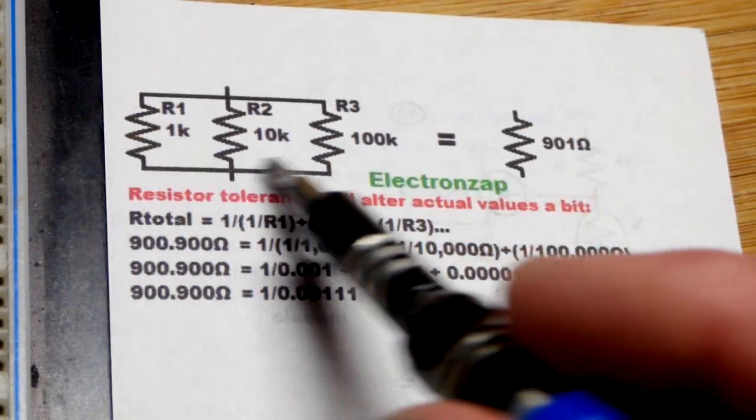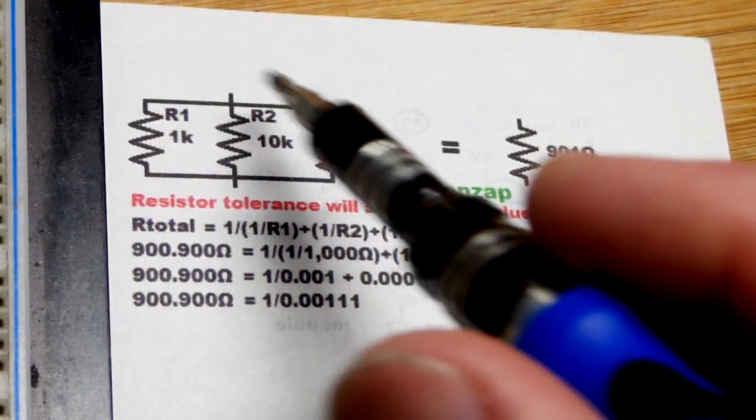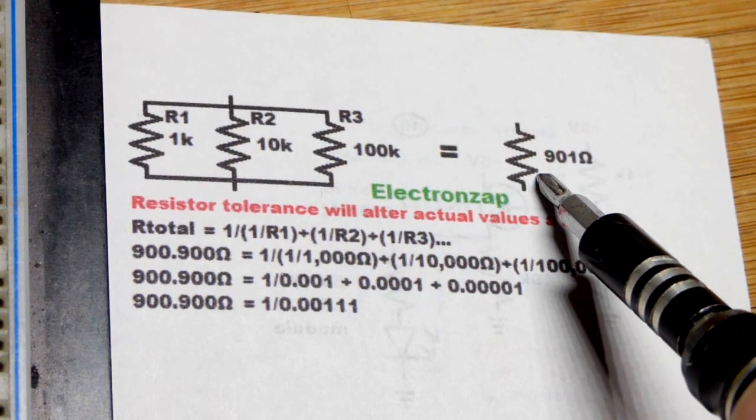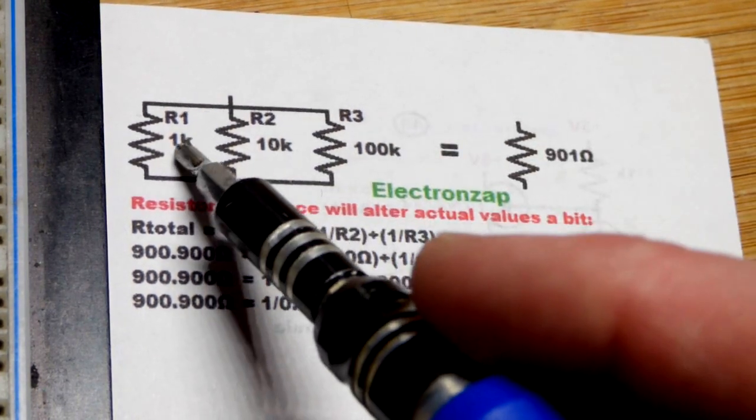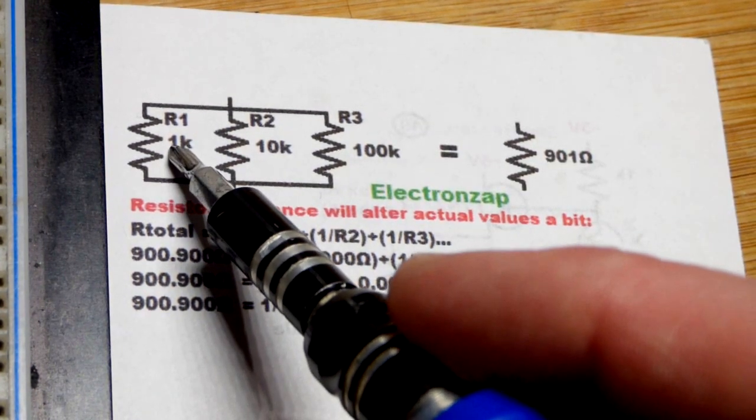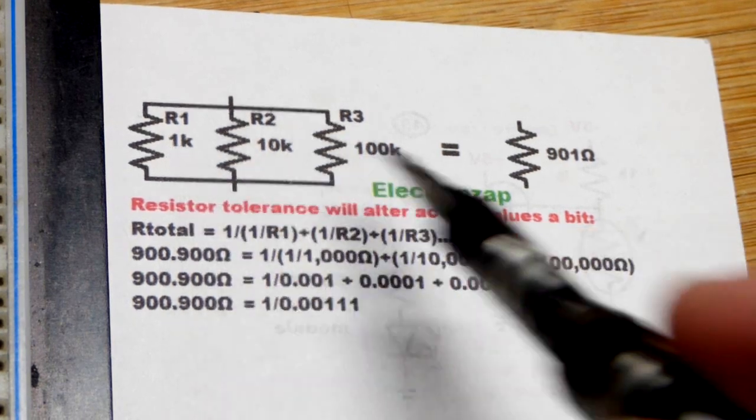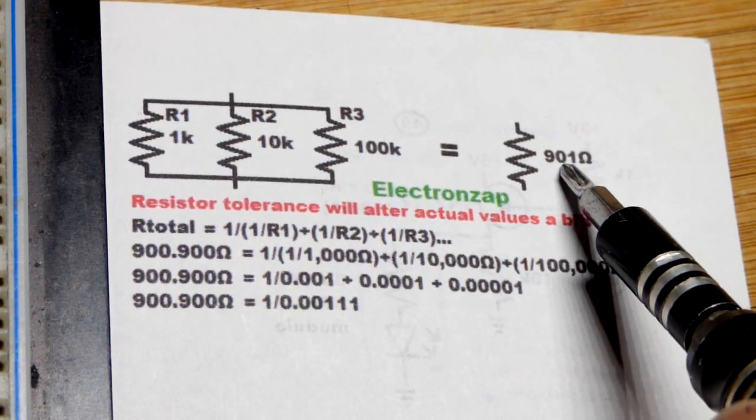The main takeaway, though, is whenever resistors are in parallel, their equivalent resistance will be less than the lowest value resistor, which in this case would be 1,000 ohms. We're going to be about 100 ohms short of that.